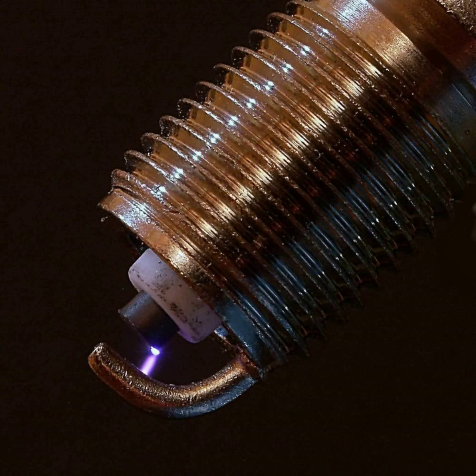Spark plasma sintering is a sintering technique that uses a pulsed direct current that passes through a conductive powder in a graphite die. SPS is faster than conventional hot isostatic pressing, where the heat is provided by external heating elements.